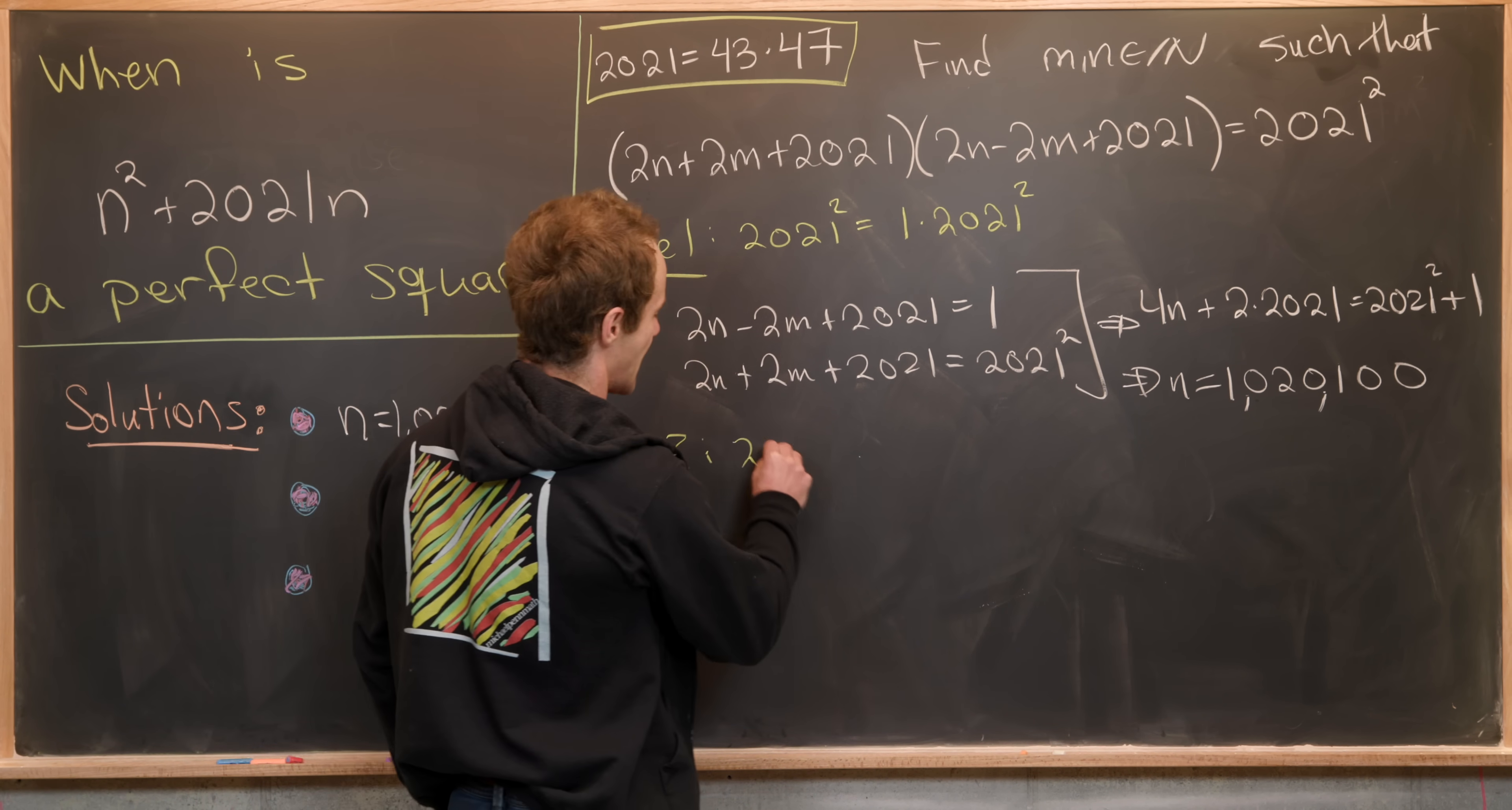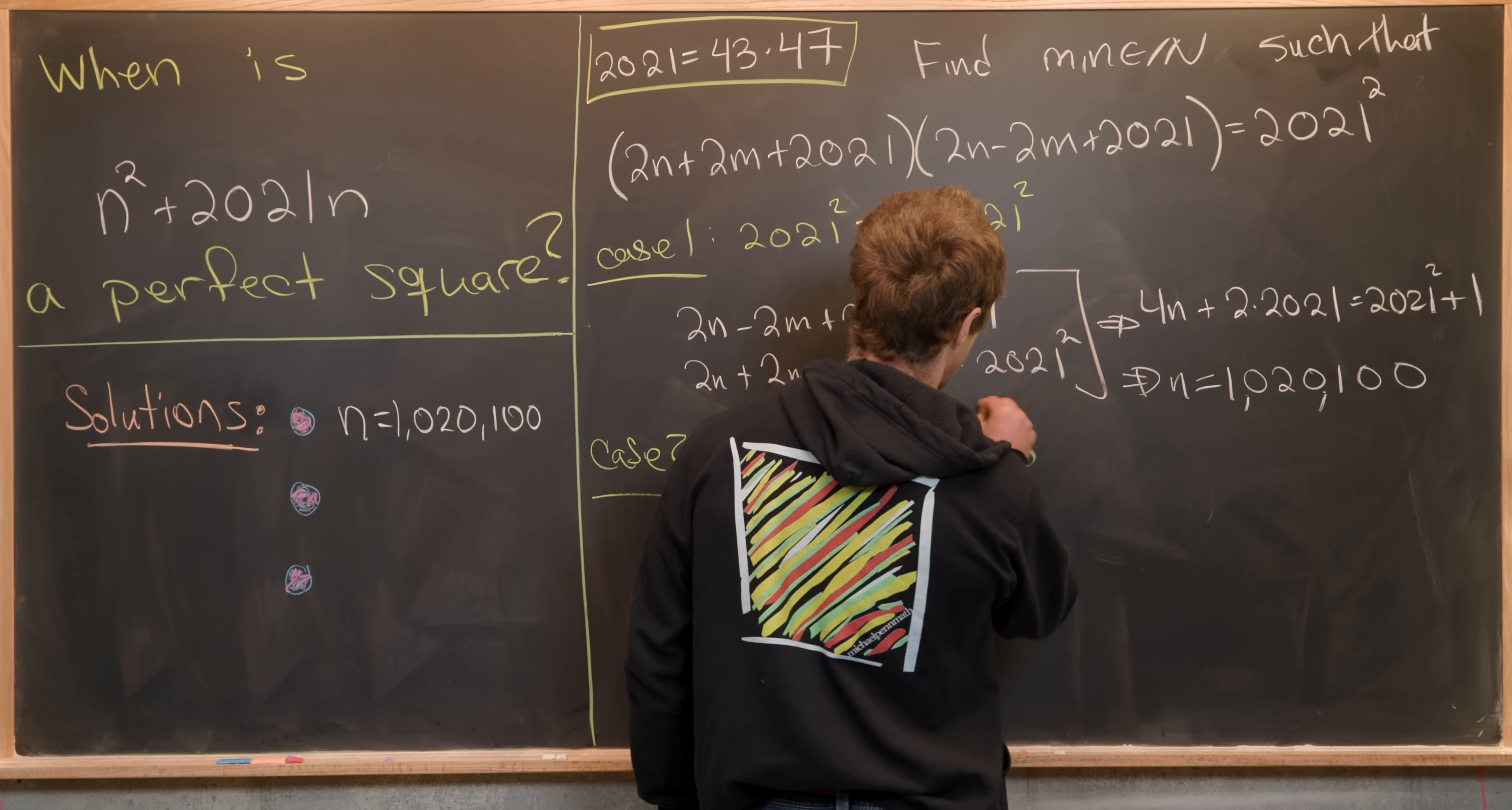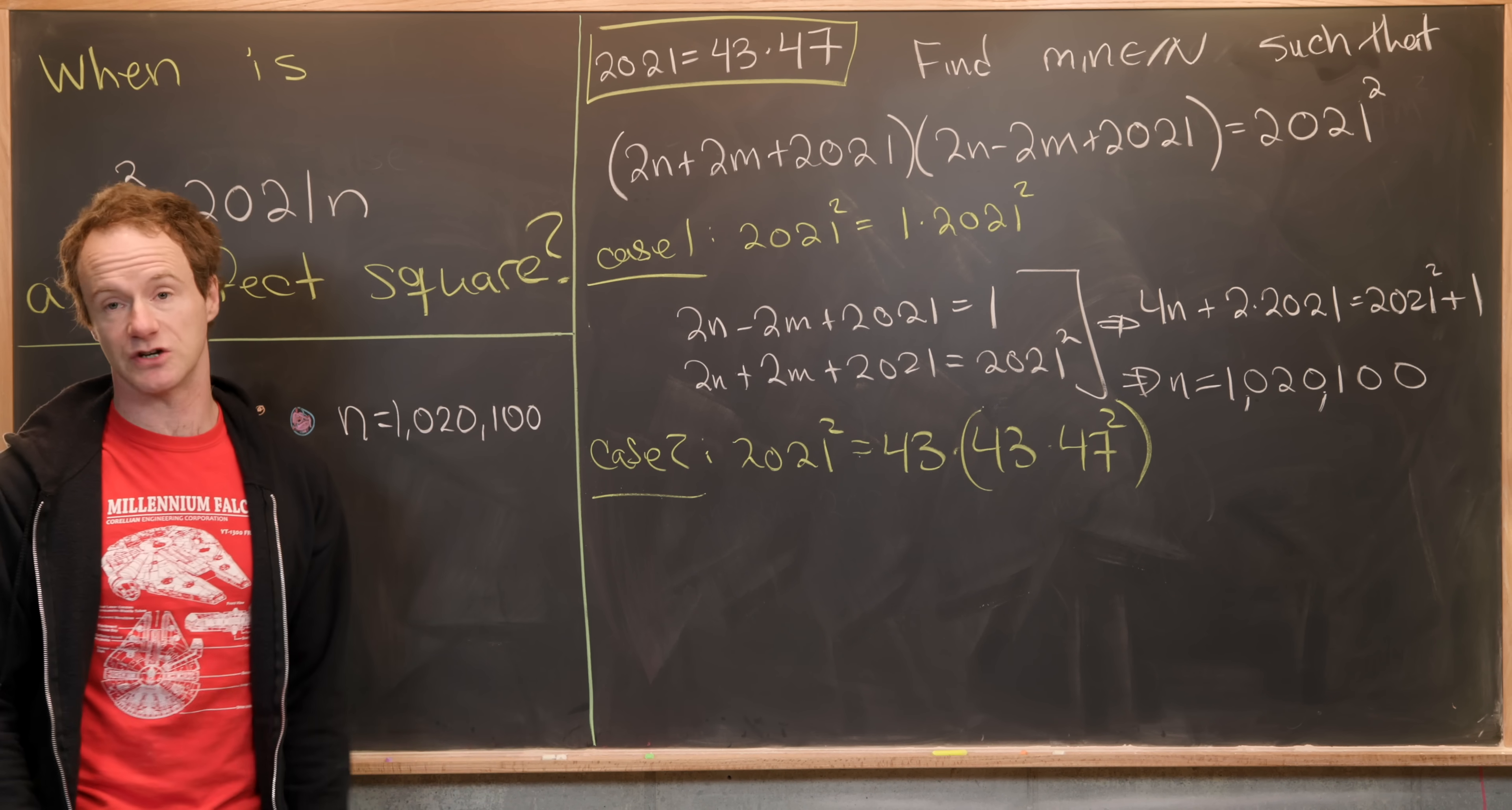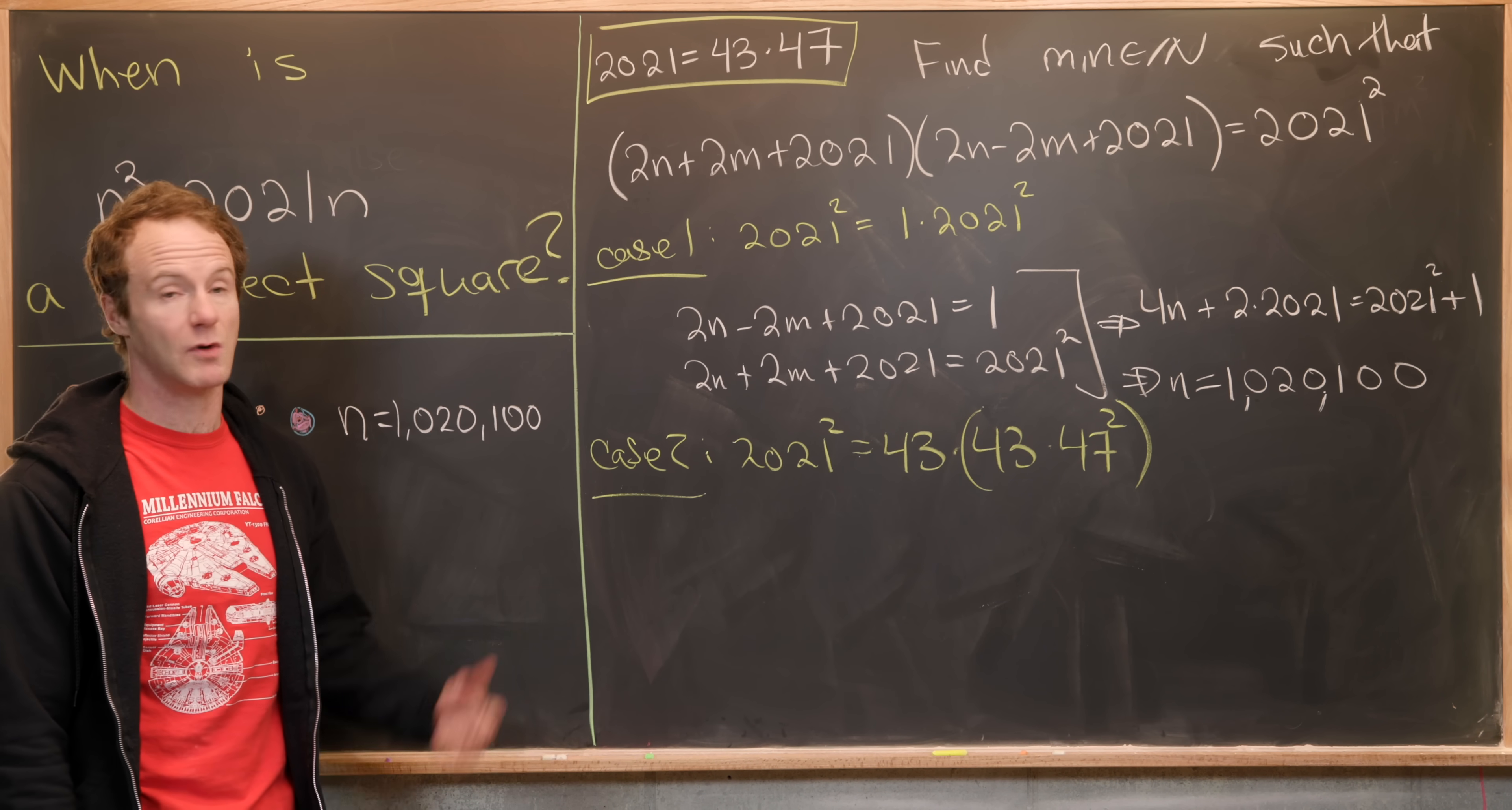So case number two will be writing 2021² as 43² times 47². So that's another factorization of 2021 squared.